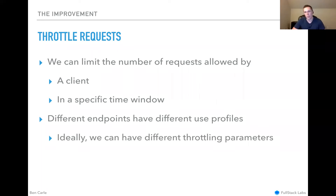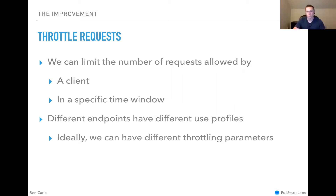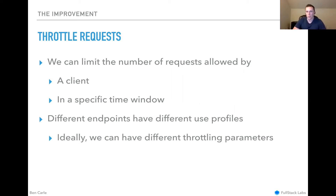We might also want to think about throttling differently for different endpoints, since they have different use profiles. Ideally we would have different throttling parameters for different endpoints. For example, GET requests are done more often, especially for a UI showing device status. POST and PUT requests — making changes or creating new devices — we'd expect a lot less frequently, so we can be stricter about throttling those. Another example: getting a token, i.e., logging in, shouldn't see much traffic from any one client. If they're hitting the token controller 10 times in even an hour, that's probably too much.